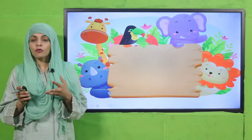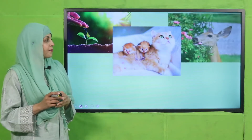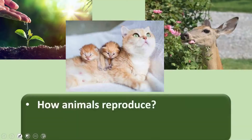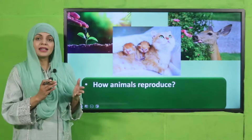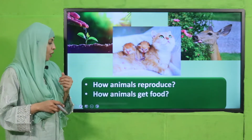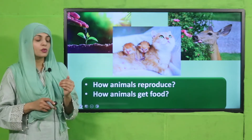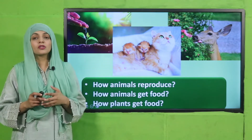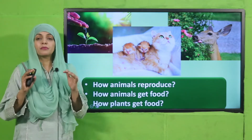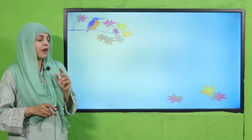Before moving on, let's quickly recap what we did in the previous lecture. Listen carefully and answer: How do animals reproduce? Birds lay eggs and some animals give birth to live young. How do animals get food? They eat plants or other animals. How do plants get food? Plants do not eat food — they make their own food in the presence of sunlight, air, and water, and the process is called photosynthesis.